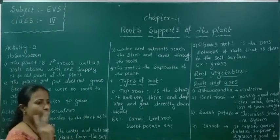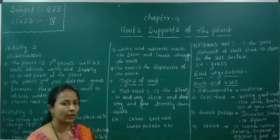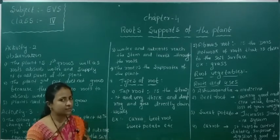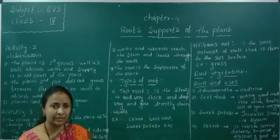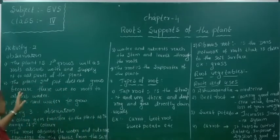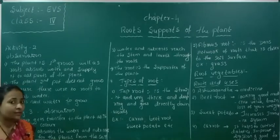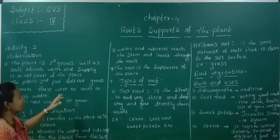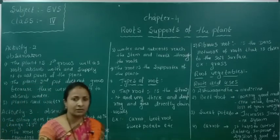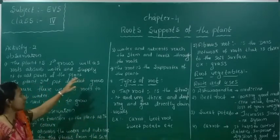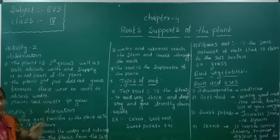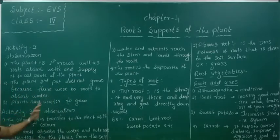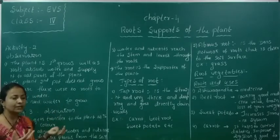We are observing two potted plants. One plant has no roots; the other has roots. The plant with roots will grow well because the roots absorb water and supply it to all parts of the plant. The plant without roots in the second pot does not grow because there are no roots to absorb water.